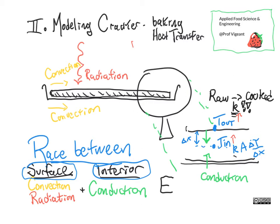Backing up to the impact of thickness: delta X talks about how thick the cracker is. Looking at what we're modeling, that all equals the rate of heat transfer. So if delta X gets bigger, the rate is going to get smaller — the heat has further to go to get to the middle and cook it.